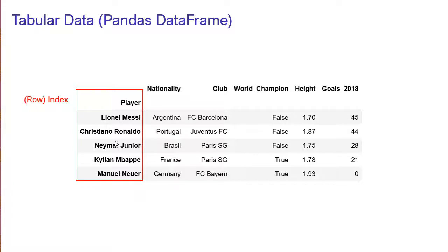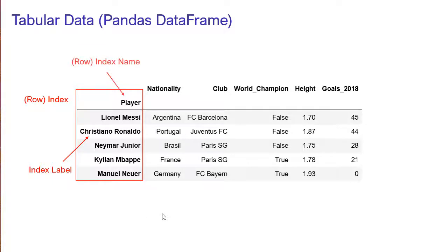On the left-hand side we have the row index of our DataFrame, or simply called the index. In this example the index contains the player names. In the leftmost part of the DataFrame in bold letters we find the index, and the elements in our index are called index labels or row labels. For example, this row has the row label Cristiano Ronaldo. We can also give a name to our row index — here it is called 'player', but it could also be 'name' or 'player name'.